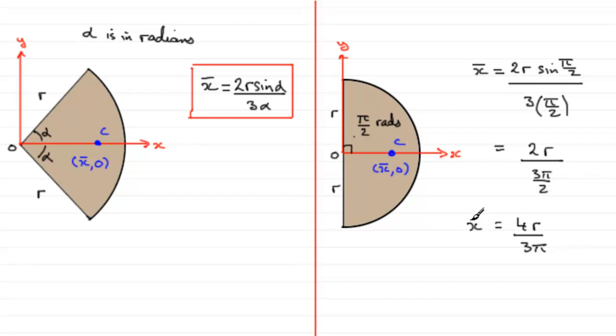So this is x-bar then, the distance of the center of mass from the straight edge here, which would be the diameter for that circle.